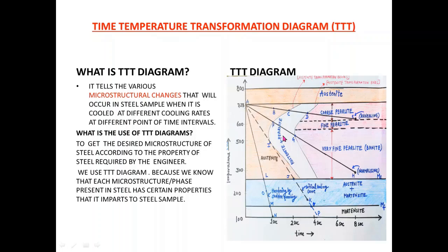The red color region on the right side corresponds to pearlite, and the violet color region corresponds to bainite, which is also called very fine pearlite. The area between the C curves has a phase mixture of austenite and pearlite. The blue color region has austenite and martensite as a mixture, and the martensite region is the strip at the bottom. The first C curve shows the start of transformation, and the second C curve denotes the end of the transformation of austenite to pearlite.